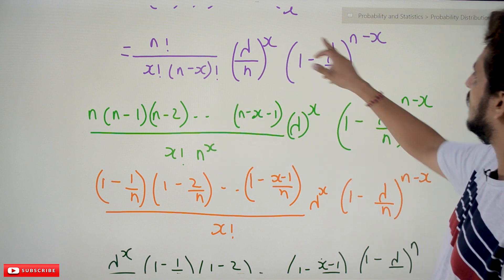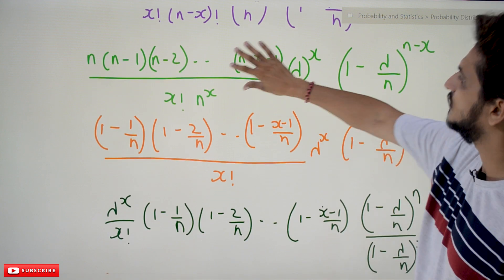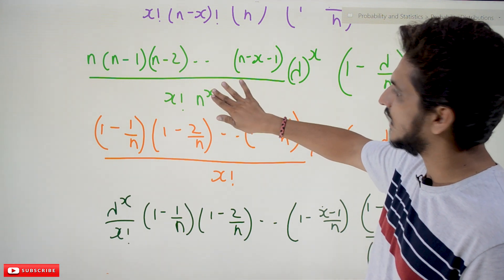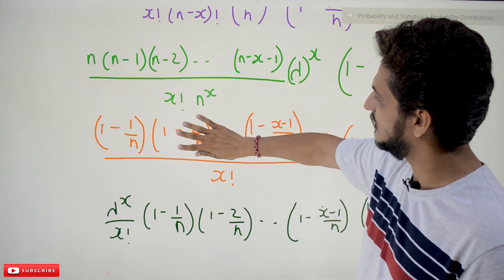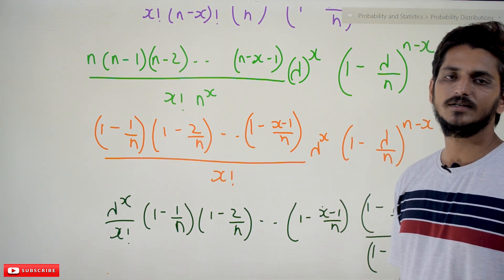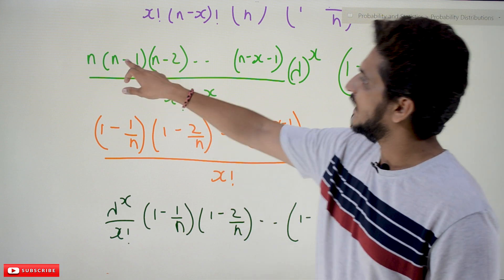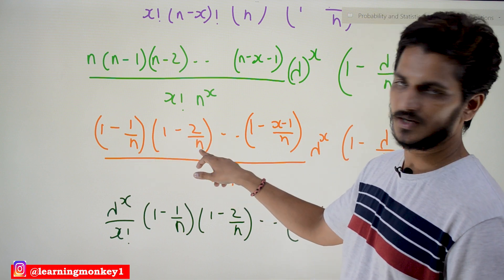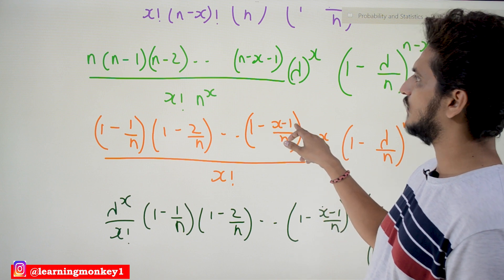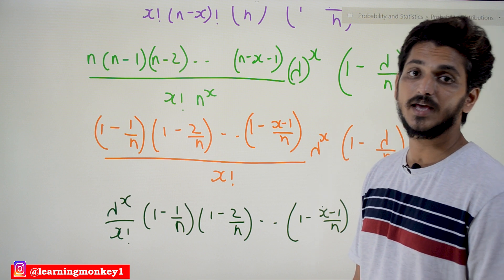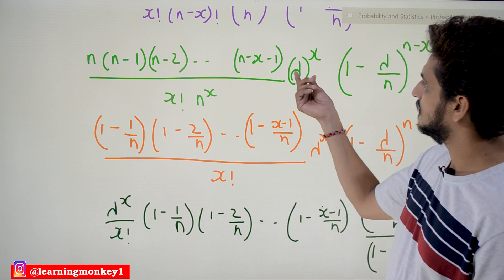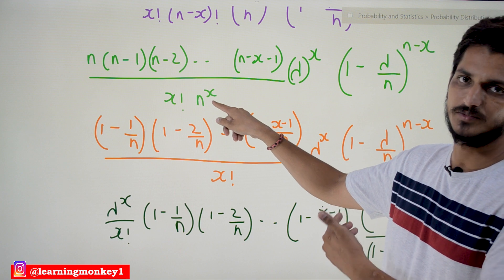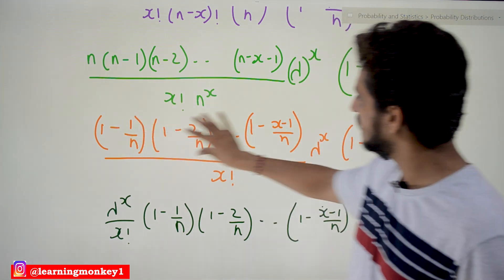So the expression n·(n−1)·(n−2)·…·(n−x+1) divided by n^x can be rewritten as (n/n)·((n−1)/n)·((n−2)/n)·…·((n−x+1)/n), which equals 1·(1−1/n)·(1−2/n)·…·(1−(x−1)/n). There are x factors in the denominator, with one n cancelling each term.